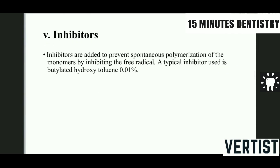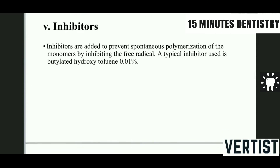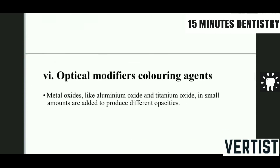Inhibitors are added to prevent spontaneous polymerization of the monomers by inhibiting the free radicals. A typical inhibitor used is butylated hydroxytoluene (BHT) so that the material does not set inside the tubes itself. Optical modifiers are colouring agents — they are metal oxides, aluminum oxides, or titanium oxides added in small amounts to give different shades and optical properties. Some composite resins are completely radio-opaque and opaquers are used to mask the inner colour of the tooth. These optical modifiers contribute to the aesthetic versatility of the material.